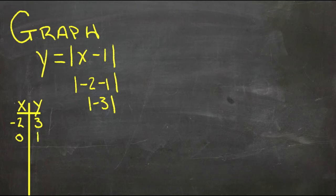What about when x is 2? If x is 2, we get 2 minus 1, that's 1, and the absolute value of 1 is 1. So when x is positive 2, y is 1 again.